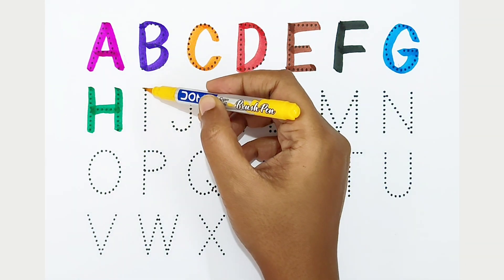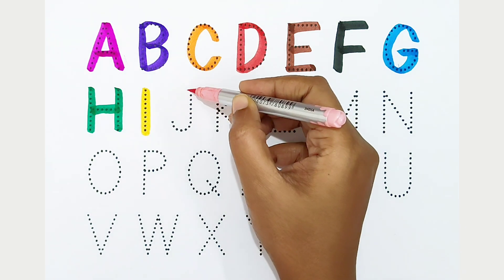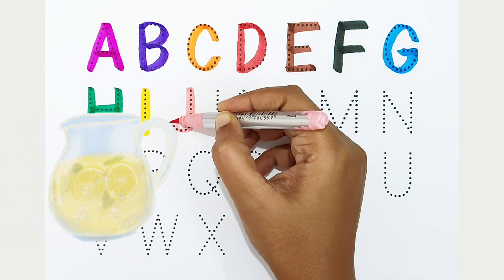I, yellow color, I is for ice. J, light pink color, J is for jug.